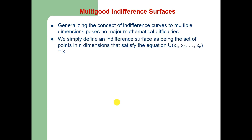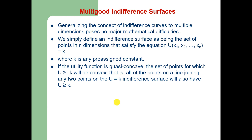Multigood indifference surface: generalizing the concept of indifference curves to multiple dimensions poses no major mathematical difficulties. We define an indifference surface as the set of points in n dimensions that satisfy u(x₁, x₂, …, xₙ) = k. If the utility function is quasi-concave, the set of points for which utility is greater than or equal to k will be convex — that is, all points on a line joining any two points on the indifference surface will also have utility greater than or equal to k.